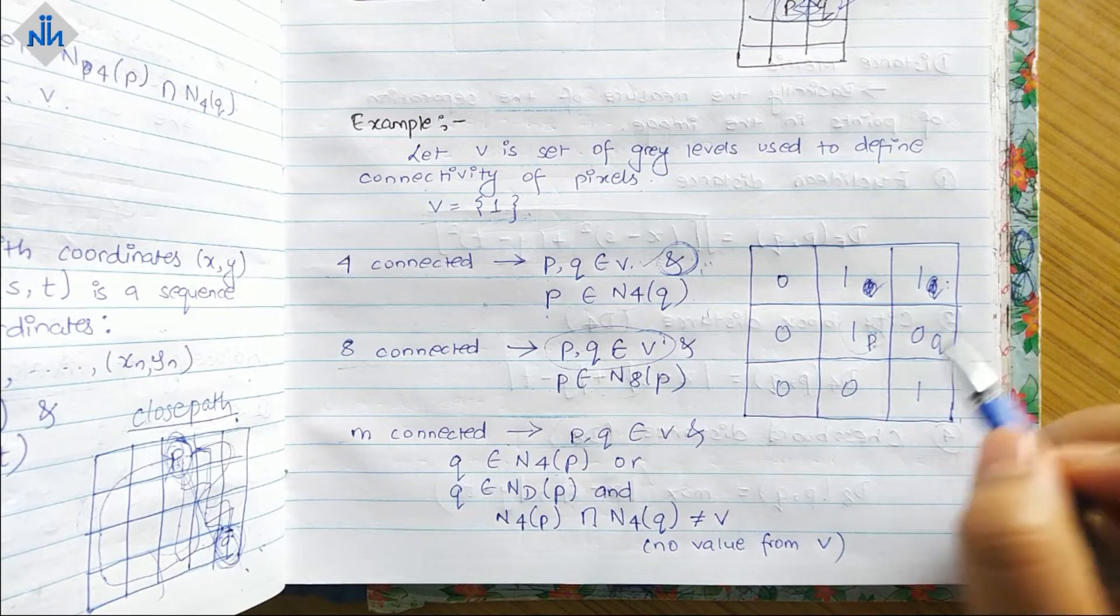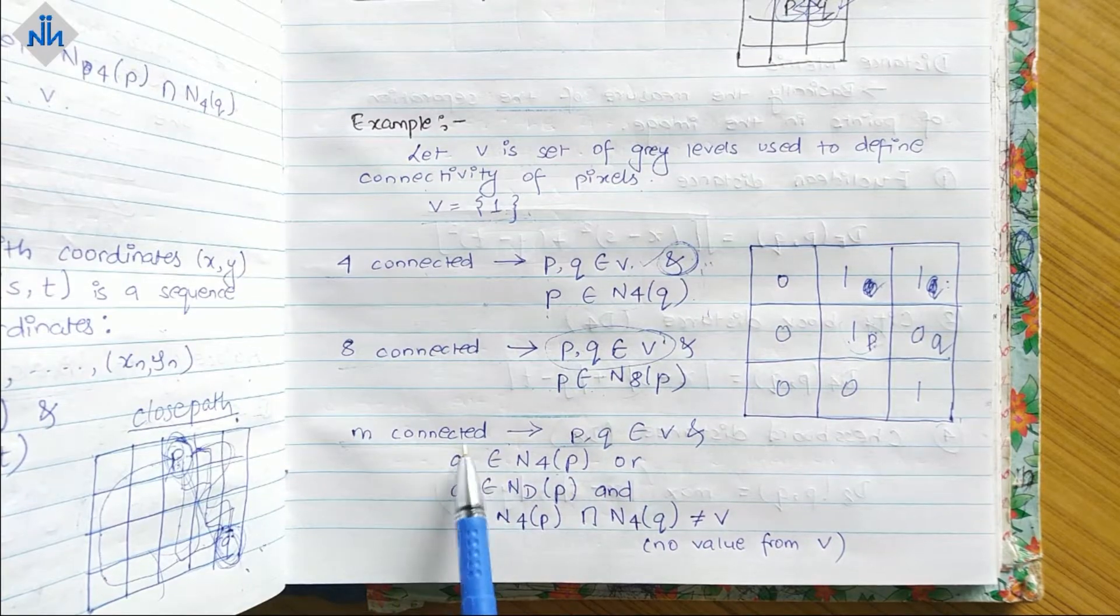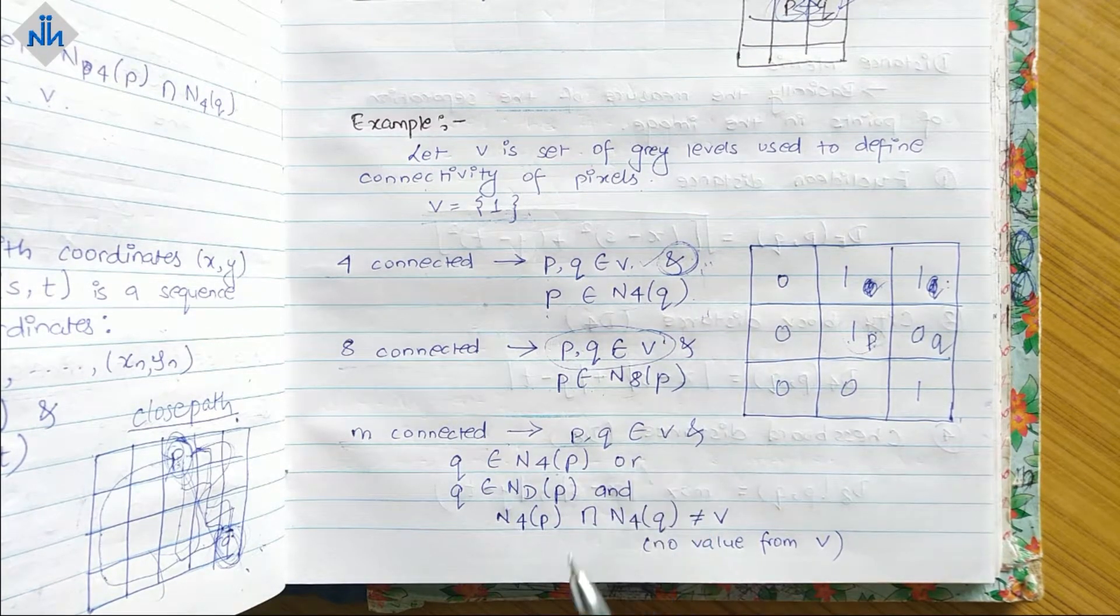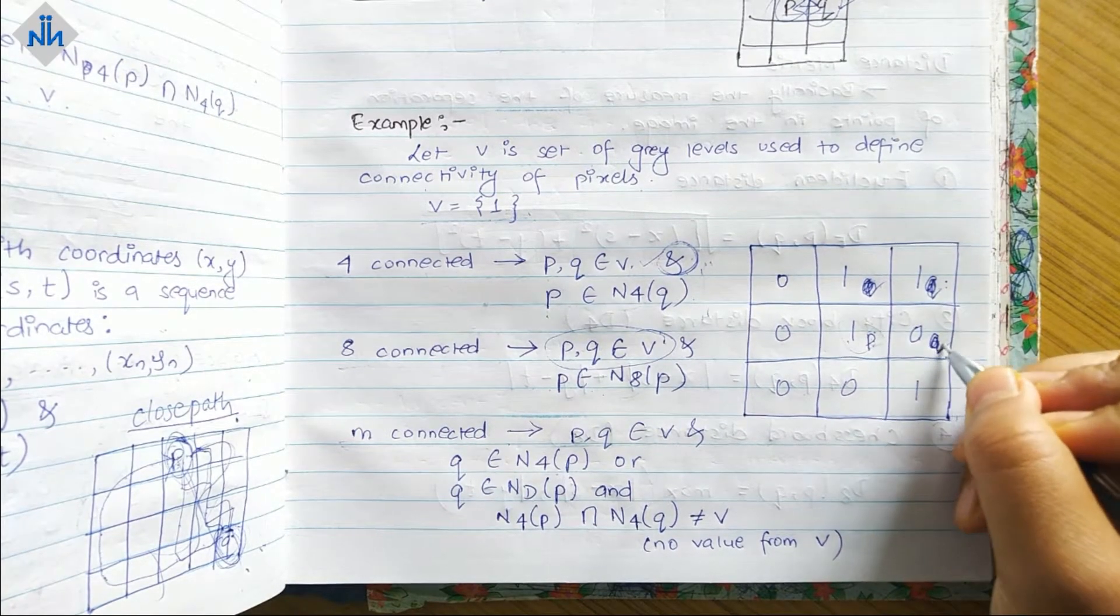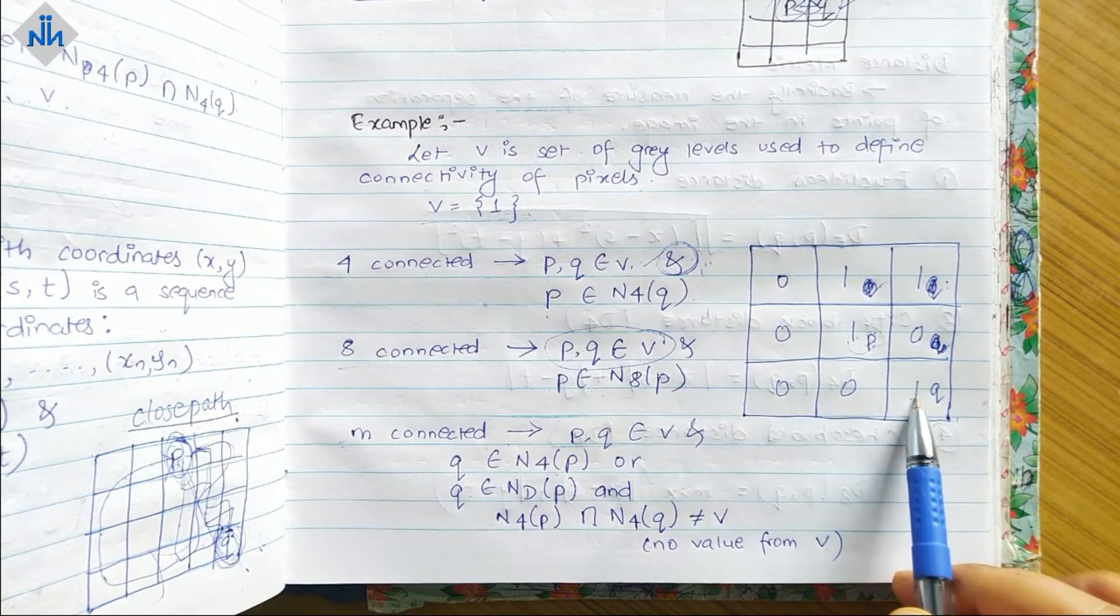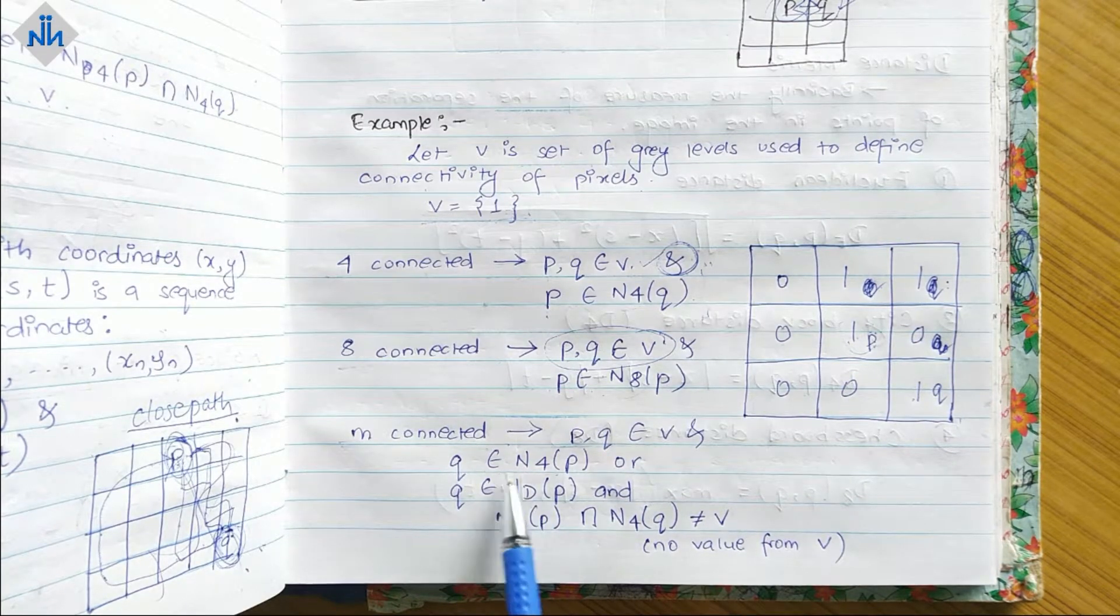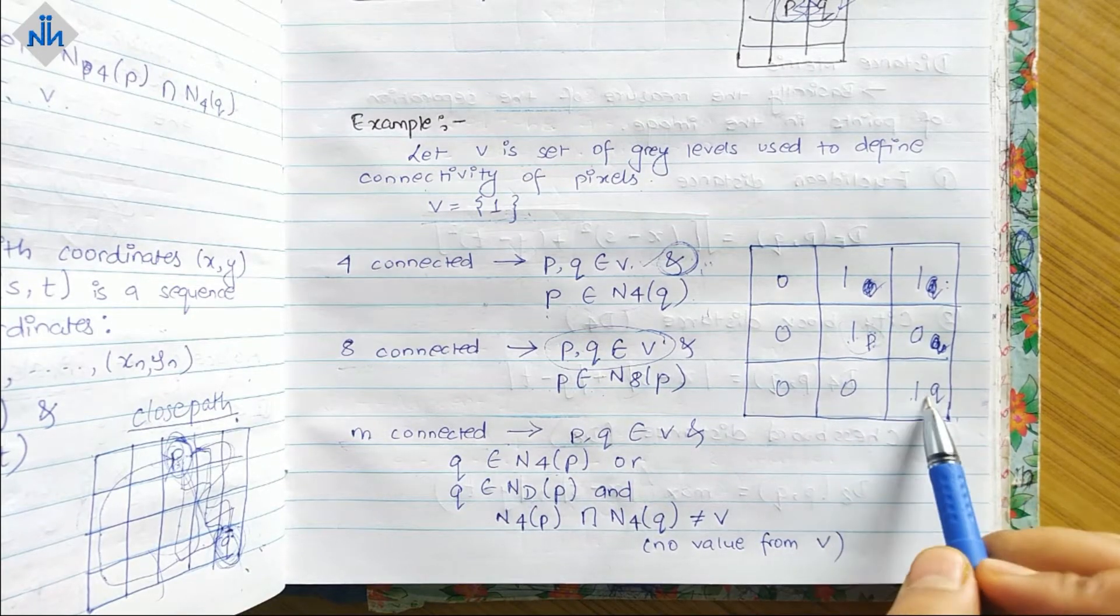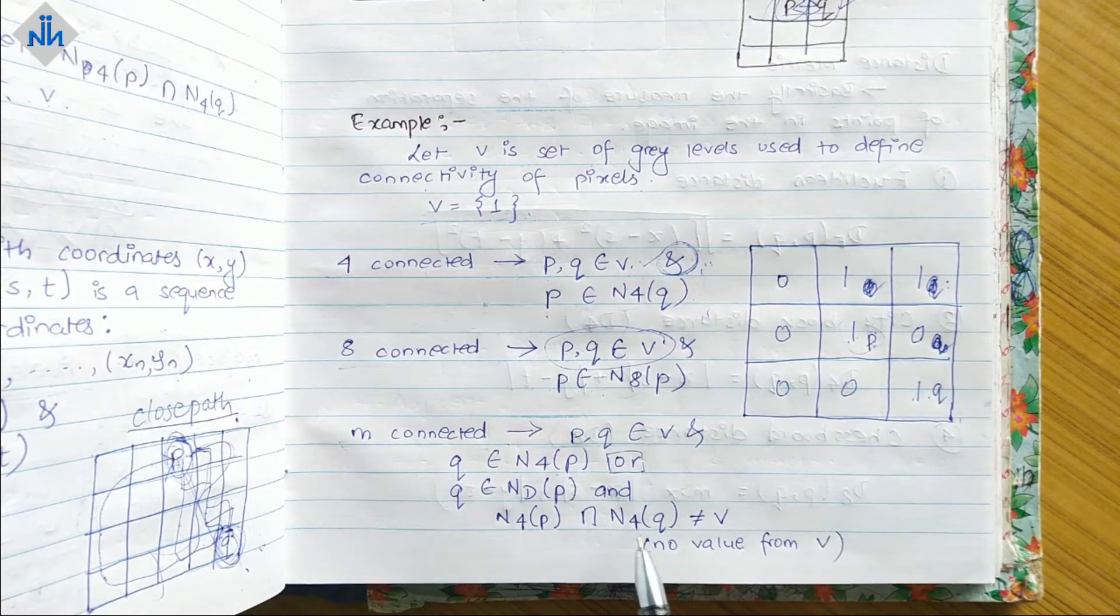Now after that comes the M connected. For M connected, first of all P and Q should belong to V - this is our first condition in anything. So let's for this example take Q over here. Yes they both are having the same intensity levels. After that, Q should belong to N4 of P, that means it should be a N4 neighbor. Is it an N4 neighbor? No.